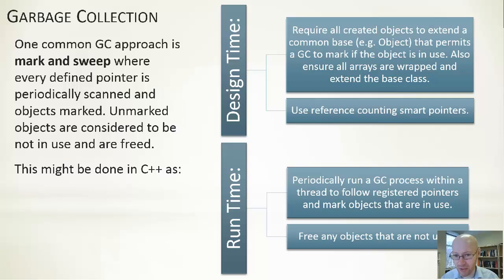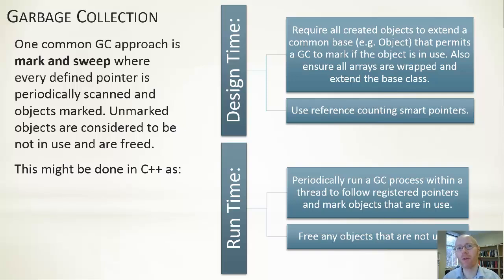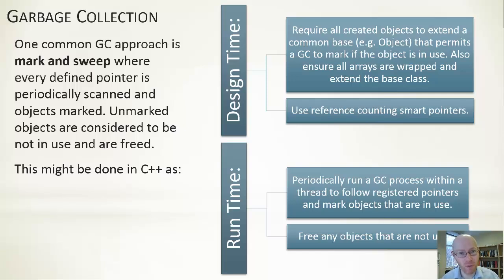In terms of the design decisions, you see two requirements at the top. Require all created objects to extend a common base class — for example, let's call it object. That's actually the case within Java and C Sharp: even if you create your own user-defined class, it implicitly extends a super class called object. All objects do. This is good because it means you have a base class where you can embed some functionality, such as Java's toString method, or the ability to get a hash code — and equally, something that we can mark.